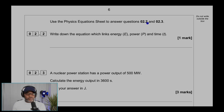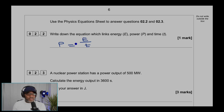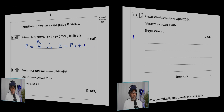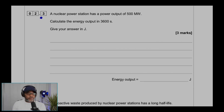Use the physics equation sheet to answer questions 2.2 and 2.3. For 2.2, write down the equation which links energy E, power P, and time T. Power is energy over time — power is the rate of energy. Rearranging by cross-multiplying P with T, energy equals power times time.